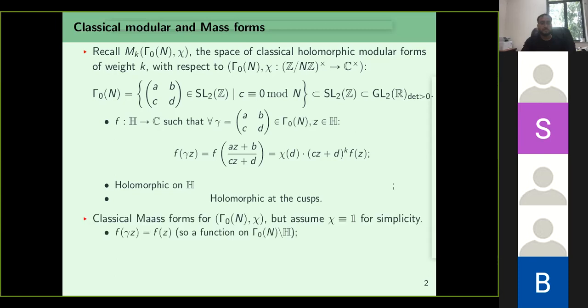We also have the notion of classical Maass forms for Gamma naught of N with character chi. Throughout the rest of today and lecture 2, we'll assume chi is a trivial character for simplicity. In this case, f is actually invariant under the left action of Gamma naught of N, but it is not holomorphic — it is only C-infinity on H.